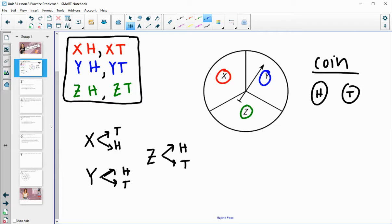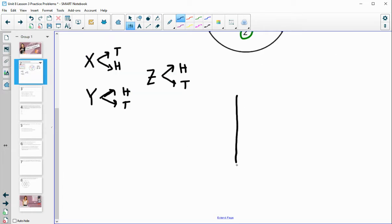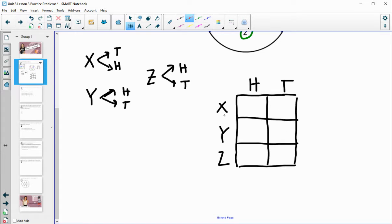You can also do a table where you kind of put your options for the spinner here, X, Y, Z, and then your options for the coin, heads or tails here. Section those off with rows and columns and then put each row with each column. So X with H, X with T, Y with H, Y with T, and then Z with H and Z with T. And you get your sample space there as well. So whatever you prefer is fine.